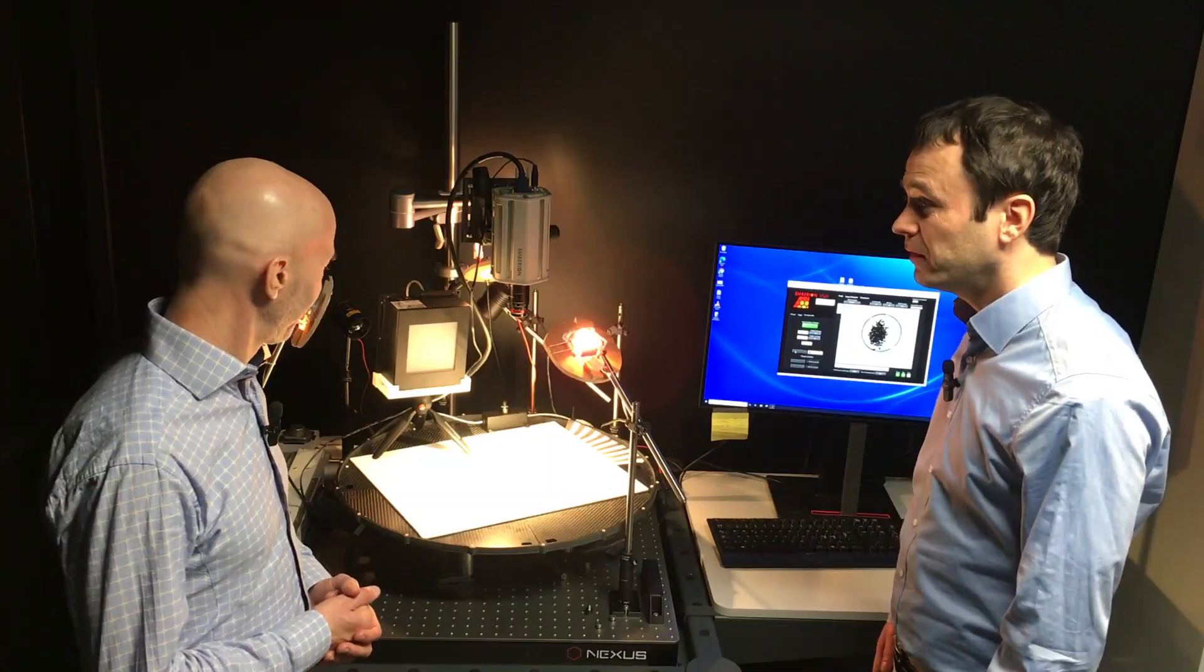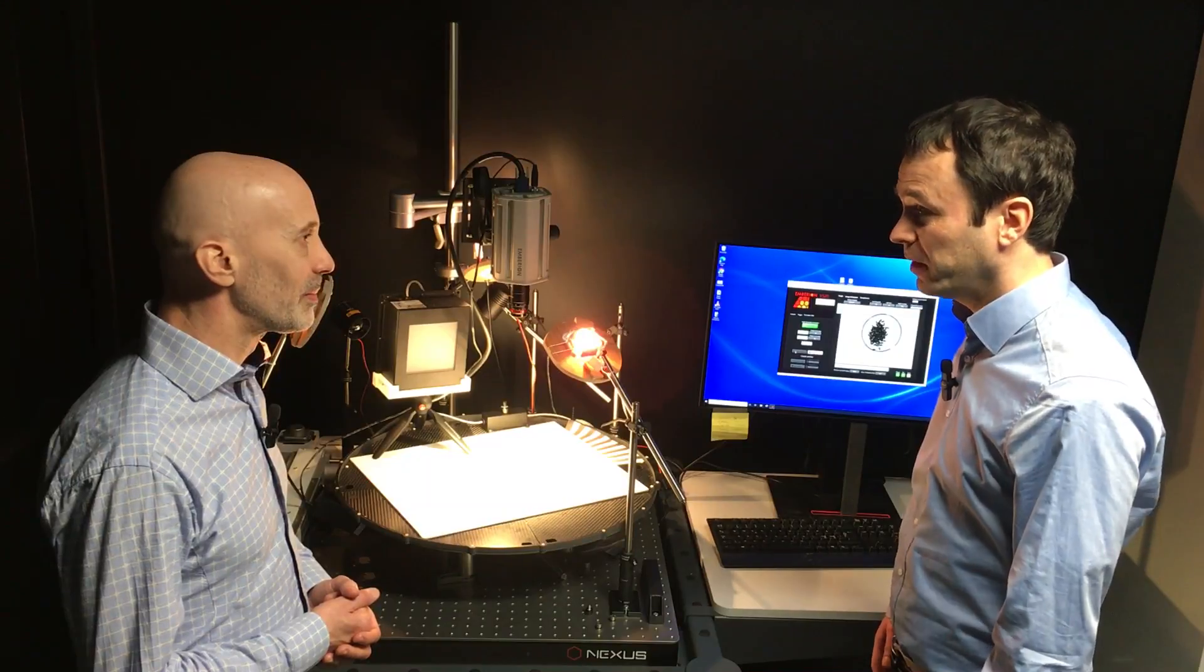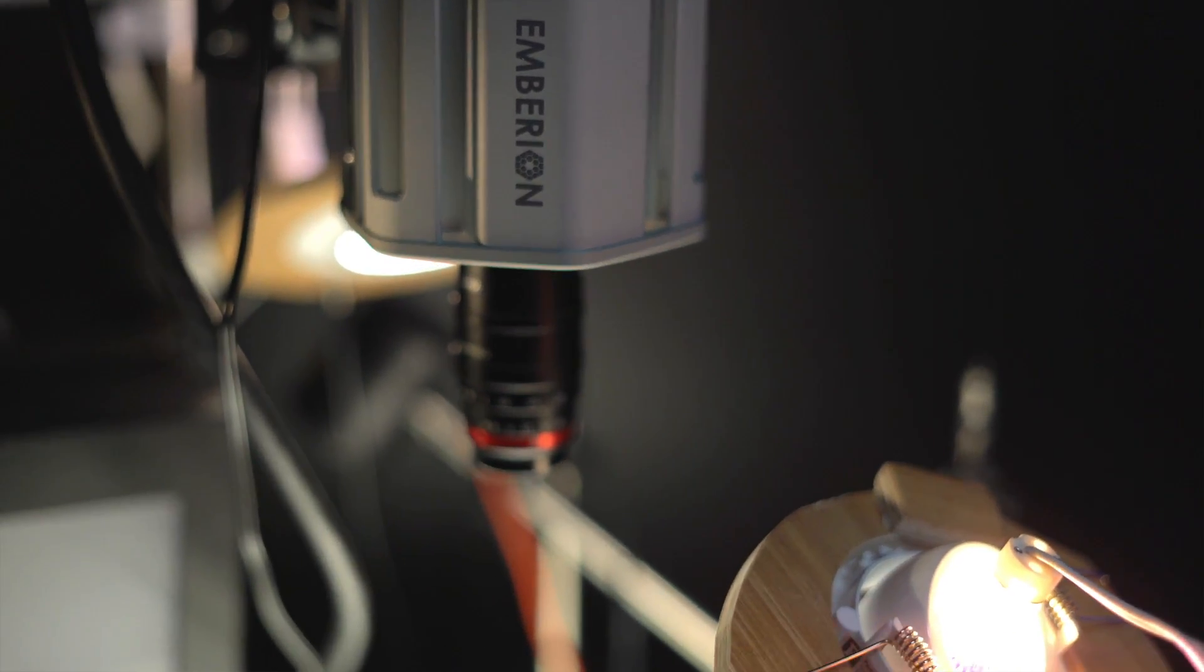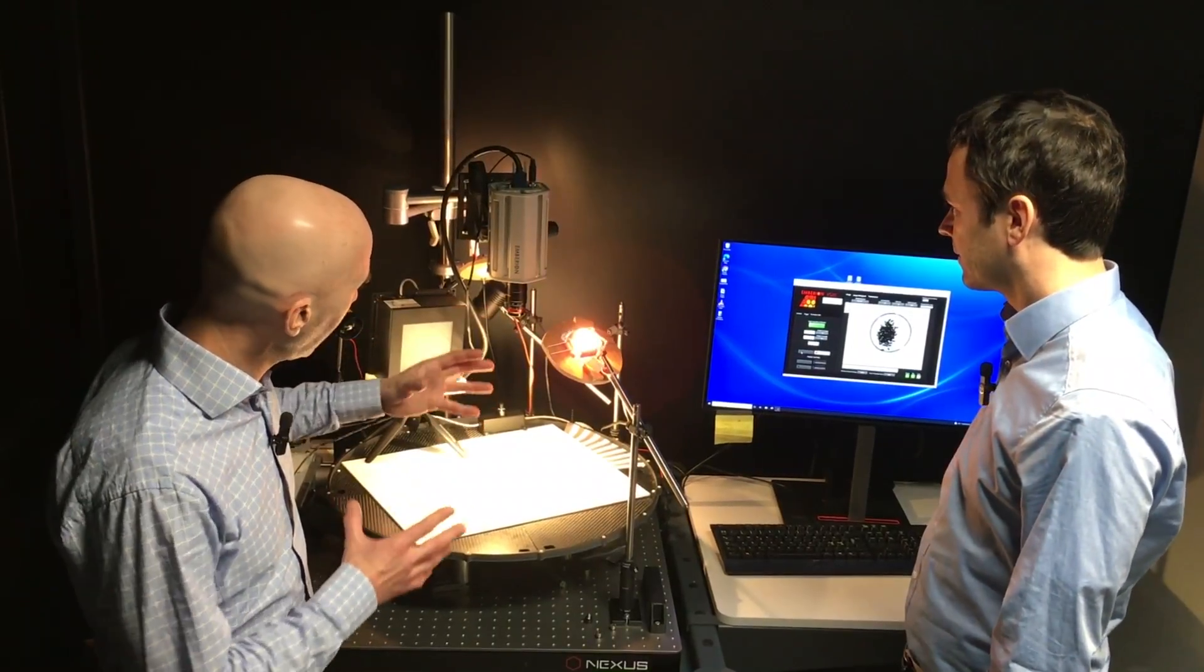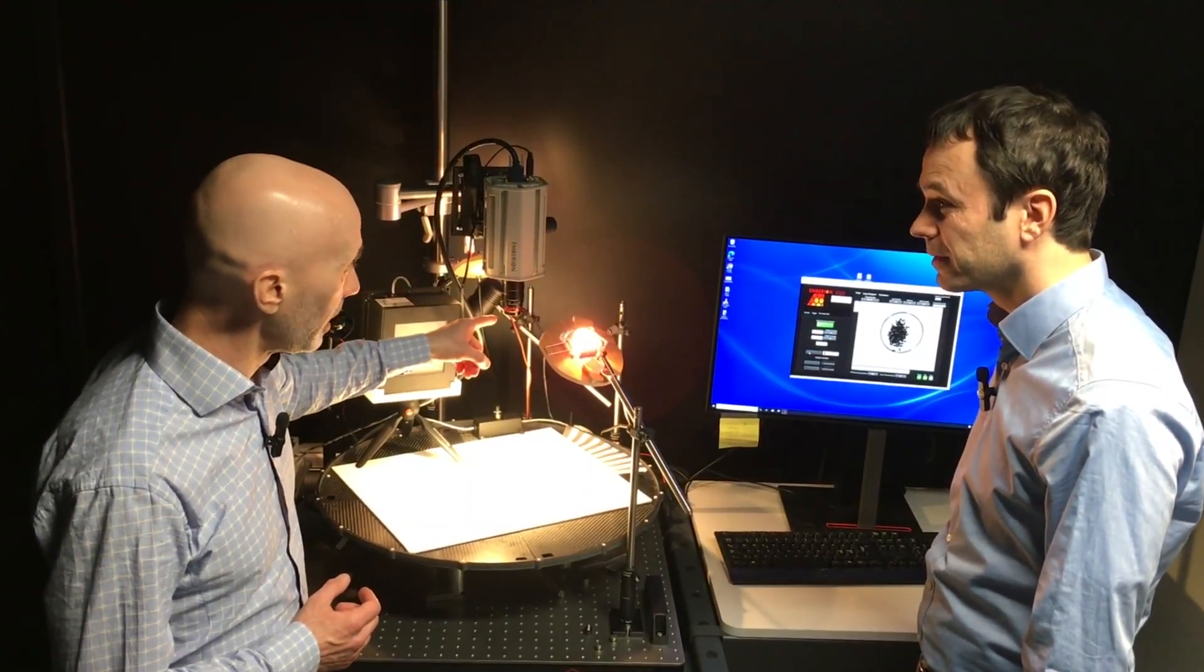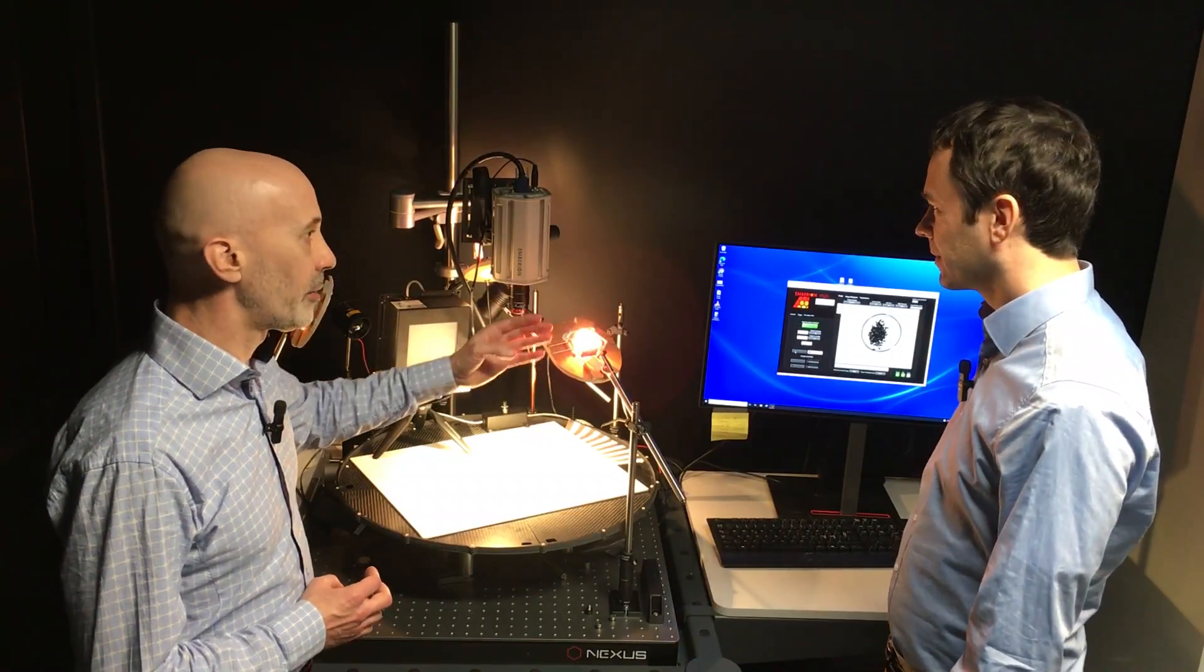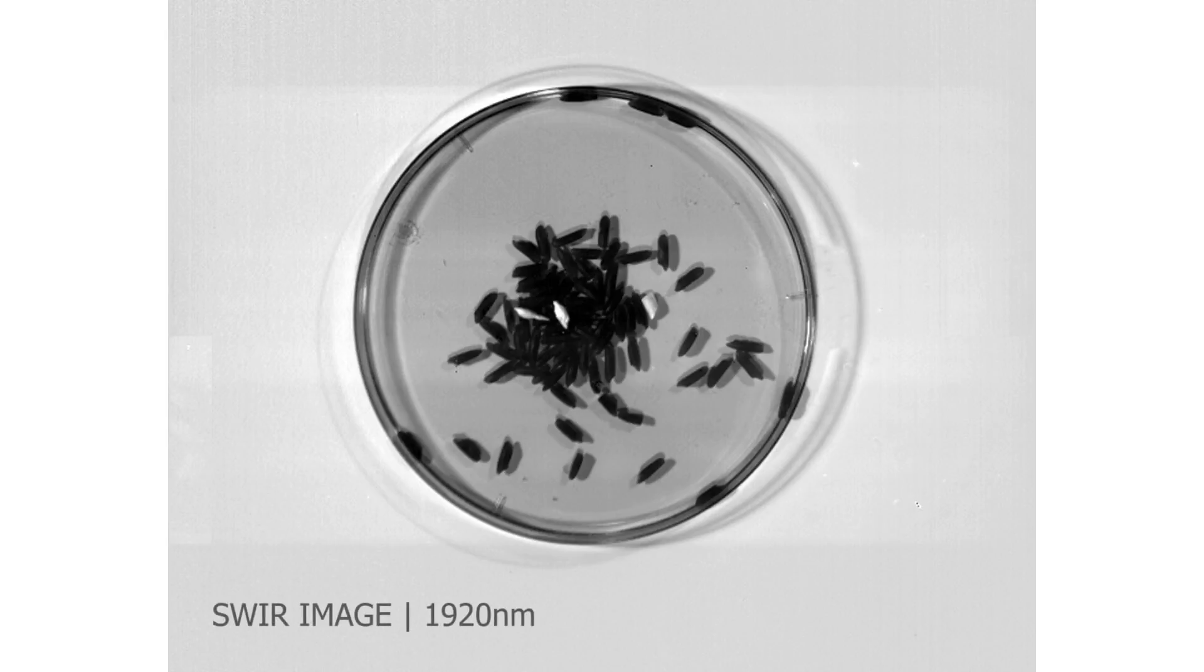What are the advantages of using the barium camera for this sort of application? As you can see on the screen, once you use a broadband light source and filter in the infrared—in this case a 1920 nanometer filter—the jasmine rice appears black while the plastic material remains white, giving you a very high contrast image that easily allows you to discriminate the rice from the foreign material.